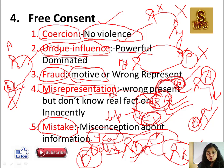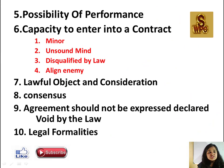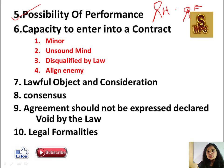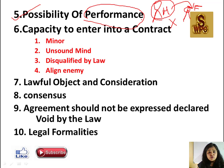Students, I hope yeh video aapko achi lag rahi hogi. Agar pasand aa rahi hai toh like karein, subscribe karein aur apne friends ke saath share karein. Next point hai: Possibility of Performance. Mr. H aur Mr. F ke beech contract hua - 'jaao chaand par aur saare taare todkar laao' - kya yeh possible hai? Answer is No. Toh kya yeh perform ho sakta hai? Nahi. Toh kya yeh contract ho sakta hai? Nahi, kyunki iski possibility hi nahi hai. The contract is not valid if the possibility of performance is not possible.